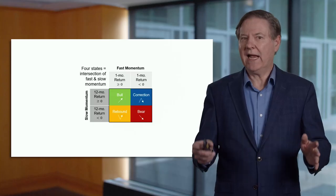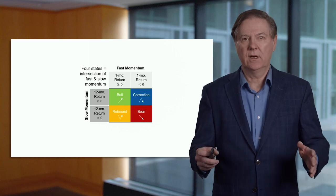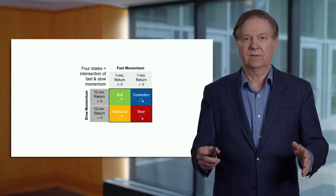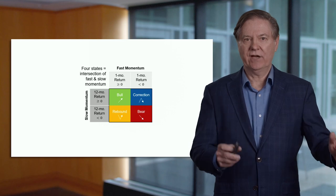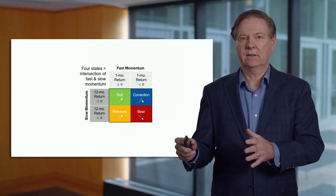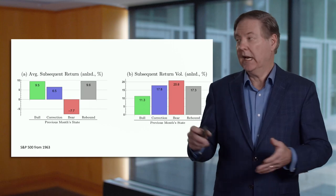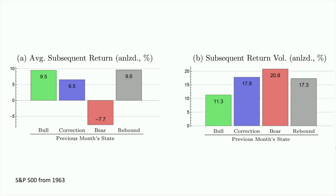So what's fascinating is what happens after the classification of these states. You classify and then look at the next month and measure the average returns. And you can see that the result is striking. After bull states, there's a strong positive average return. This is based upon the S&P 500 from 1963. And after bear states, you've got a strong negative return. So this classification is very useful in separating the returns.